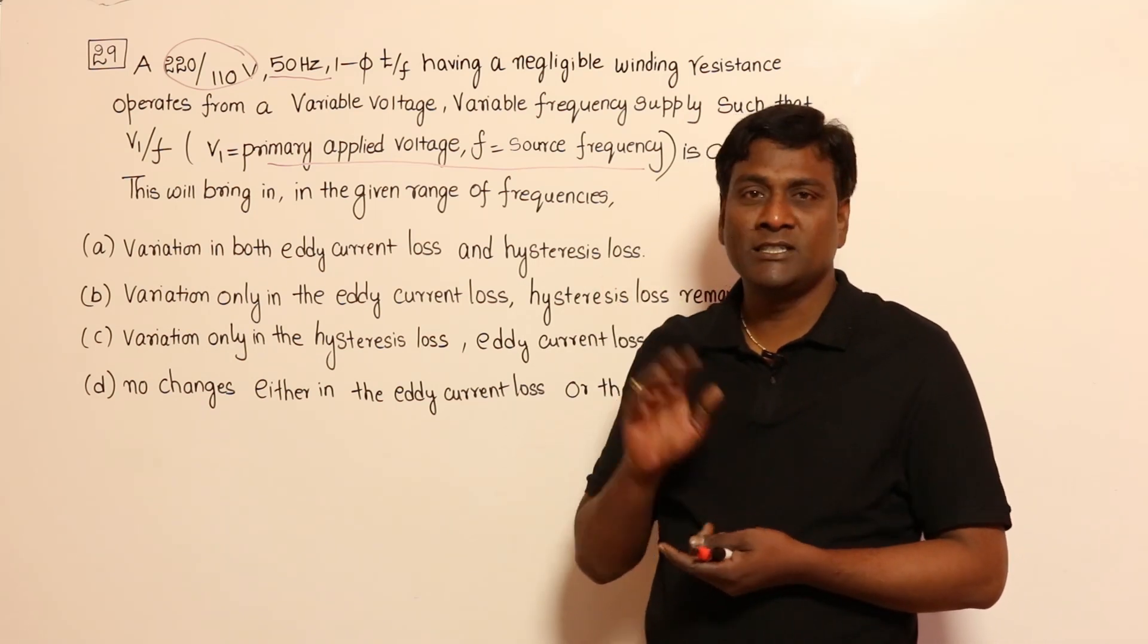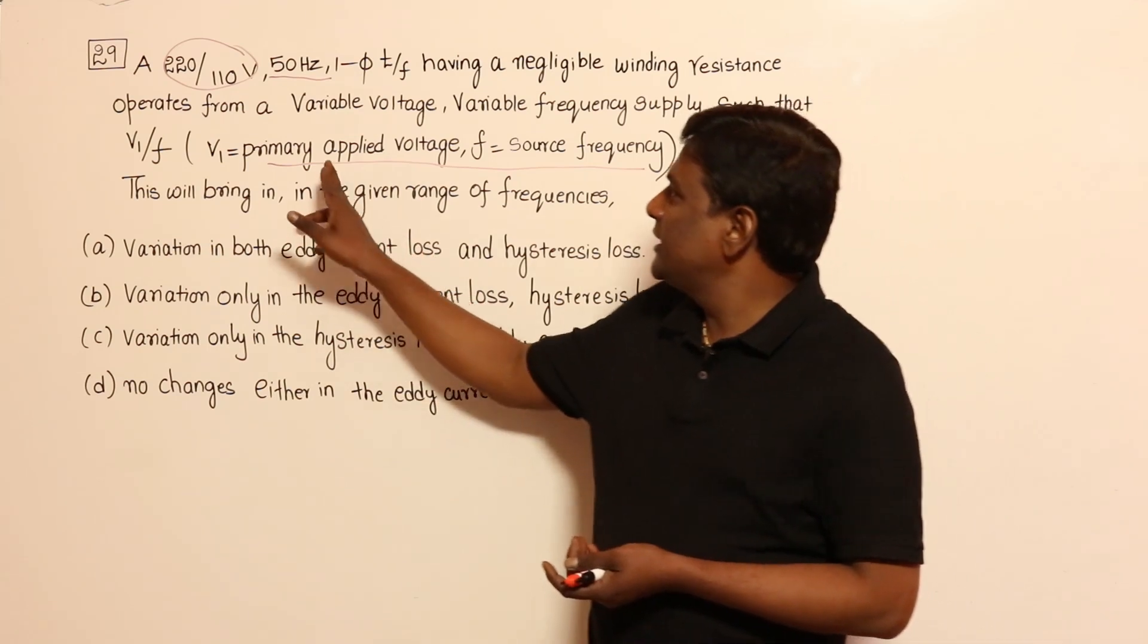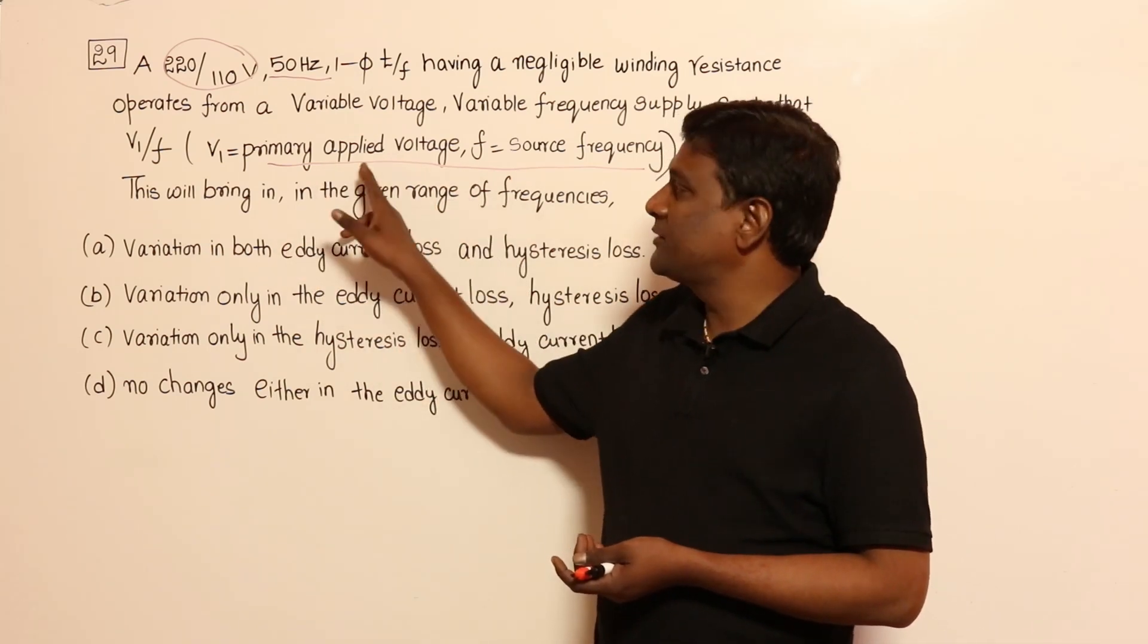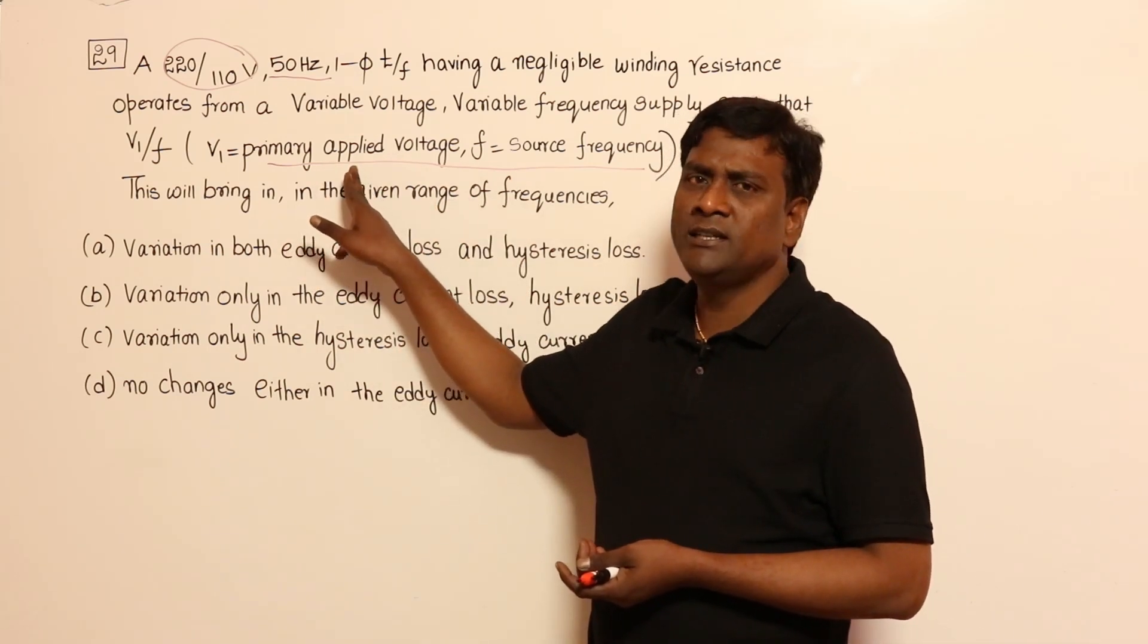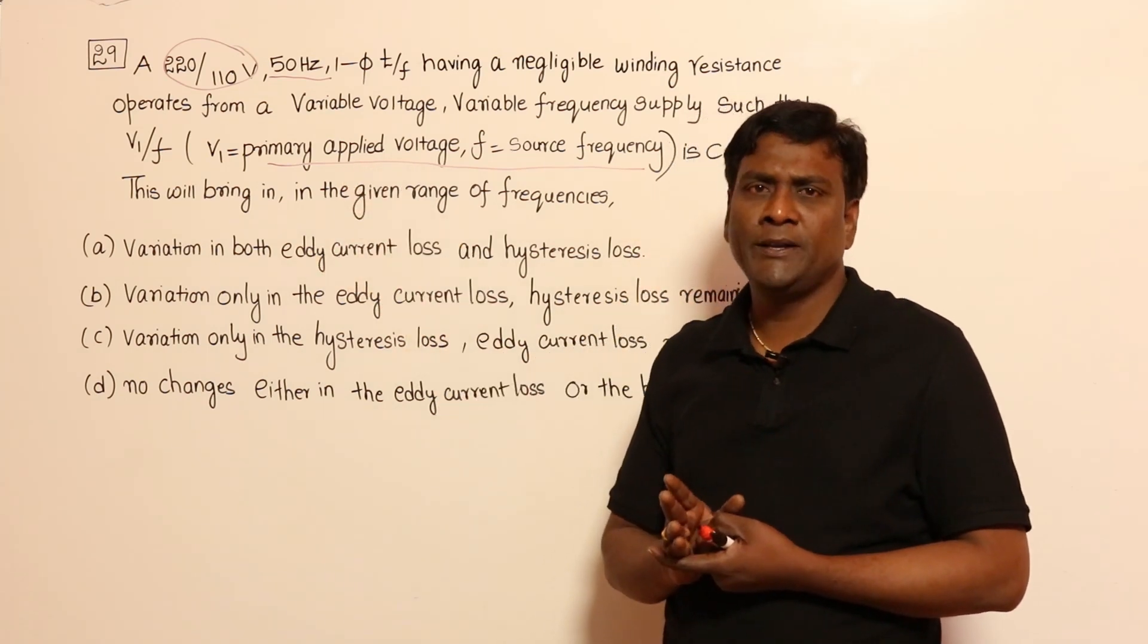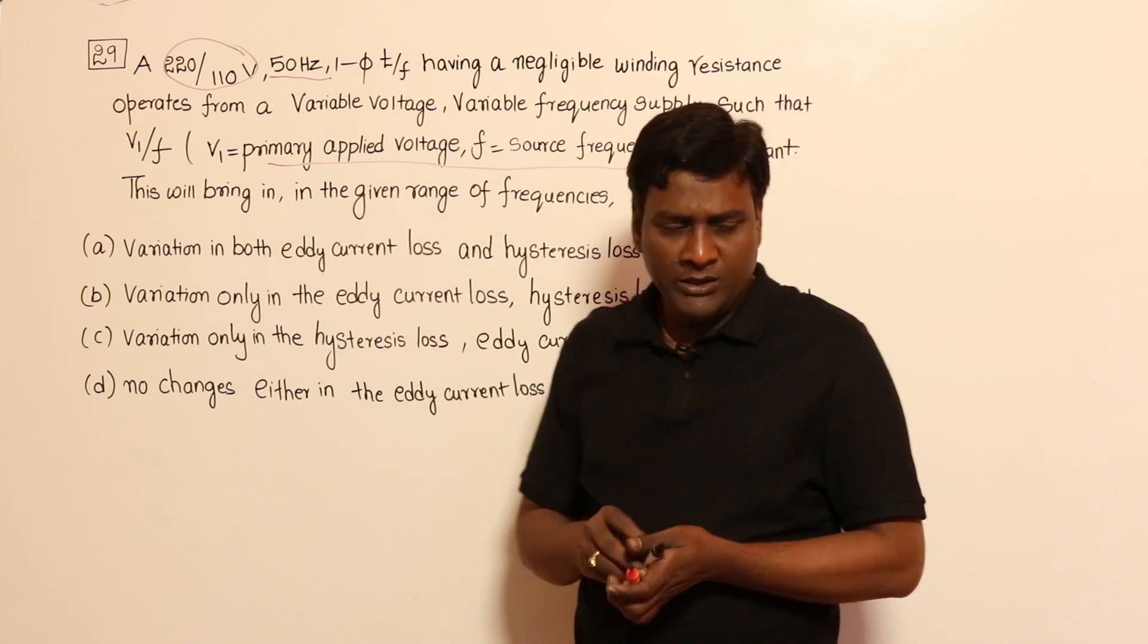Eddy current loss depends only on voltage, independent of frequency. So in variable voltage, variable frequency, when V by F ratio is maintained constant, ultimately voltage is being varied, so eddy current losses have to vary.